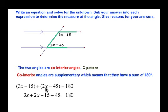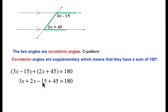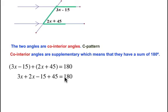Now we drop the brackets and collect like terms. This simplifies to 3x + 2x - 15 + 45 = 180. Adding the like terms: 3x + 2x is 5x, and negative 15 plus 45 is positive 30. Watch your signs there.